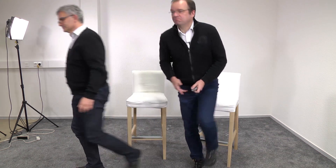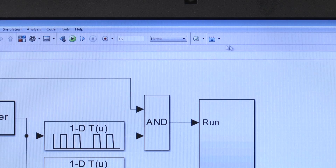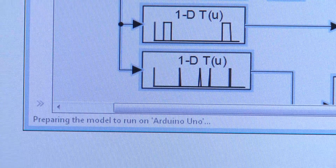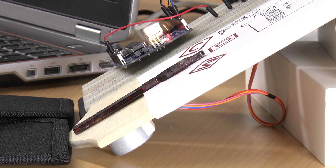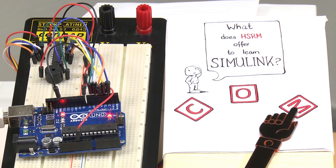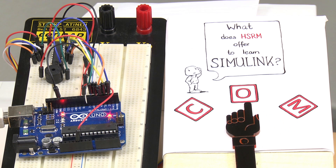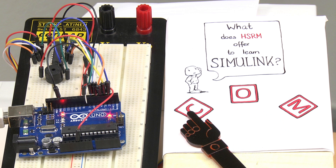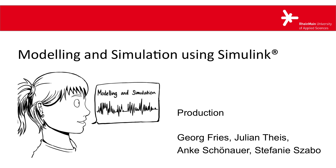Patrick, to summarize, what does Rhein-Main University of Applied Sciences offer to learn Simulink? Let's ask some real hardware. Here, I've got a simple application using Simulink and an Arduino to control a step motor and a B-bar. Let's ask the application what we offer. It told us it's the MOOC. The MOOC will be the next step. Thank you.